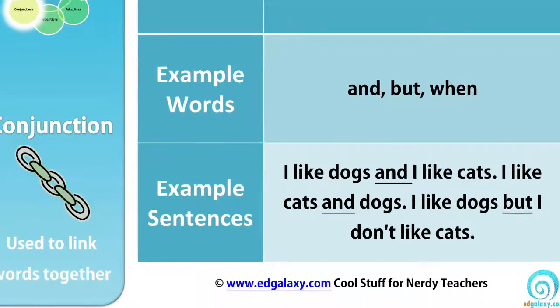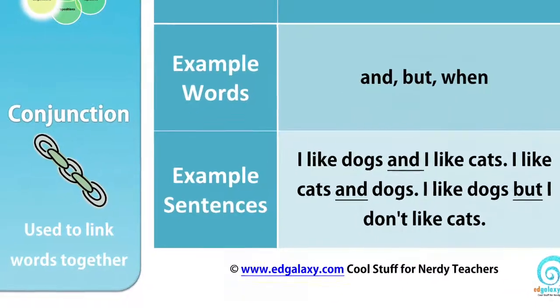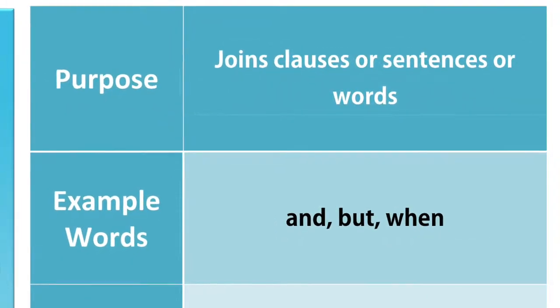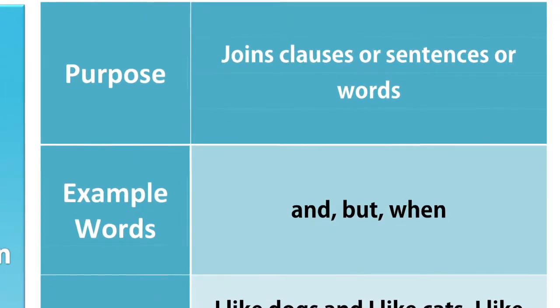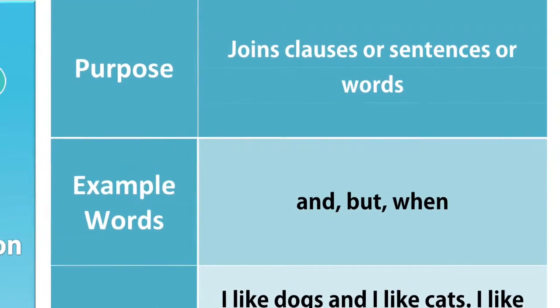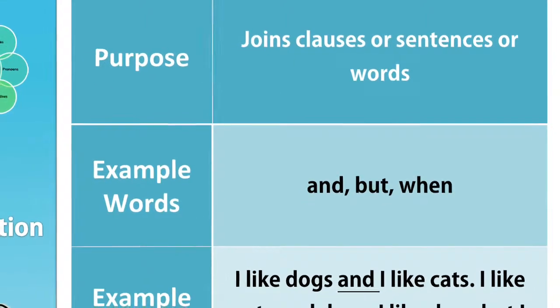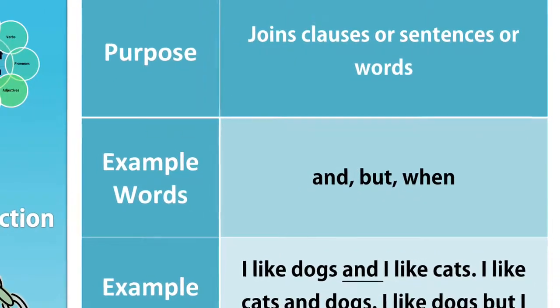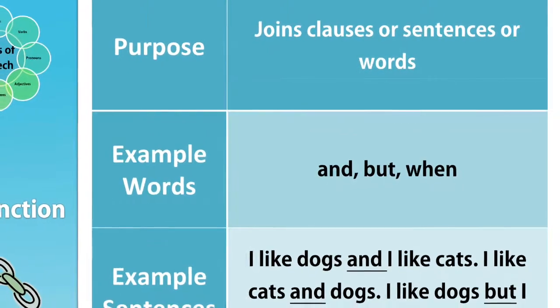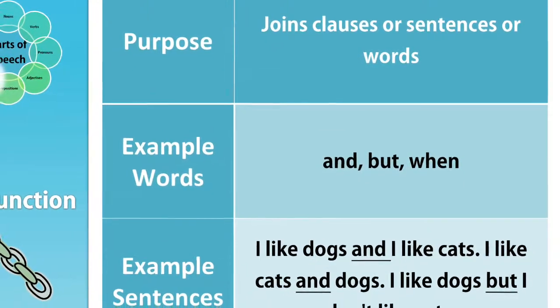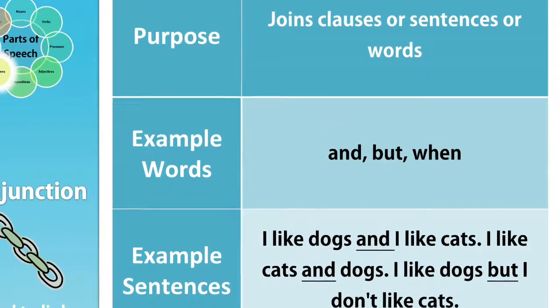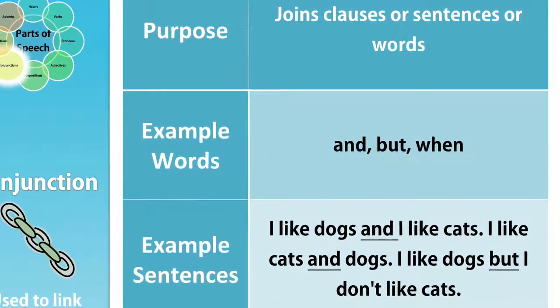Conjunction. A conjunction is used to link words together. Its purpose: it joins clauses or sentences or words. Example words: and, but, when. Example sentences: I like dogs and I like cats. I like cats and dogs. I like dogs but I don't like cats.